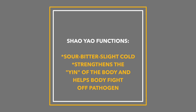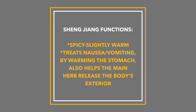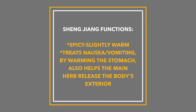The third herb, shengjiang, which is fresh ginger, is called an assistant herb. It helps the main herb not only treat any nausea and vomiting through warming the middle. A deficiency of the middle, like in the digestion, can often cause nausea or what's called counterflow. So any kind of cough, nausea, or vomiting is all counterflow, where qi is going up and not down. It helps the qi, or the energy of the body, come back downward.